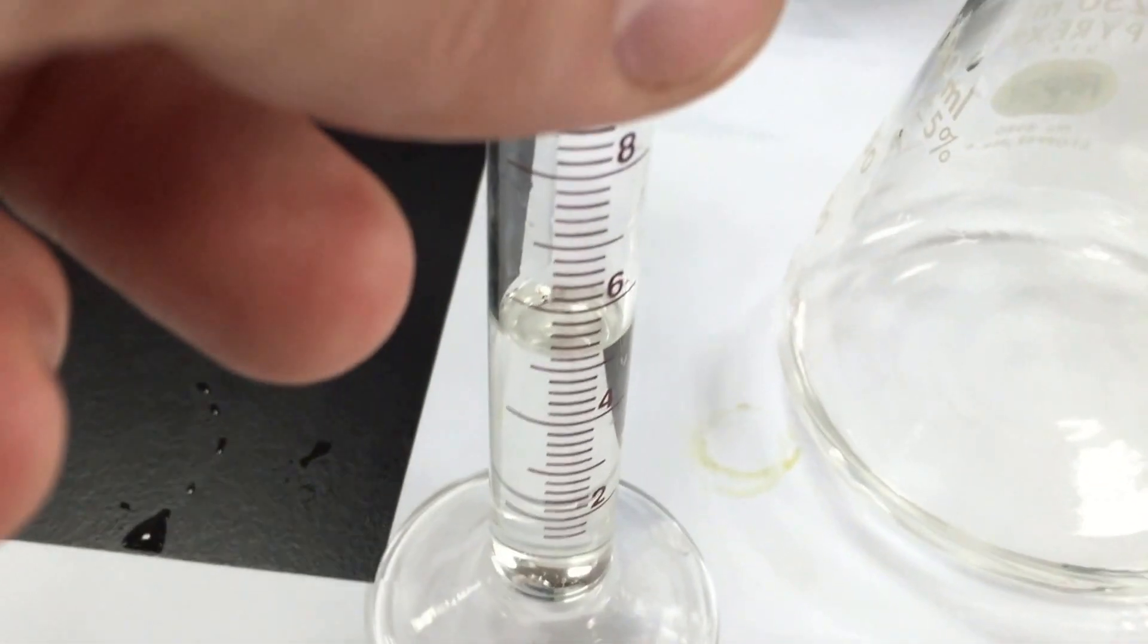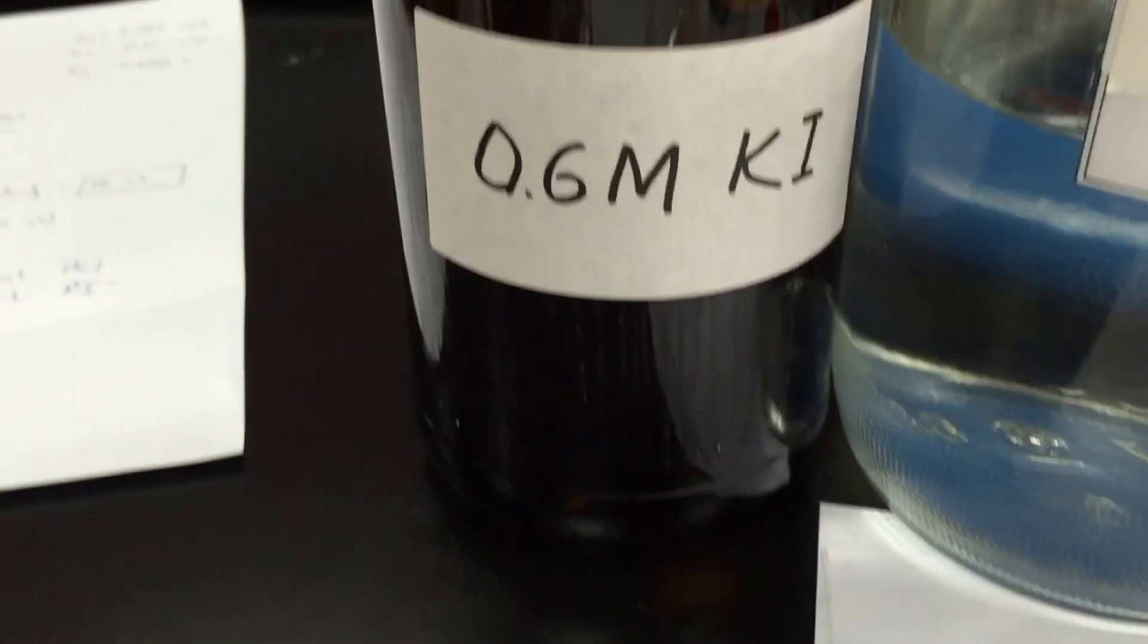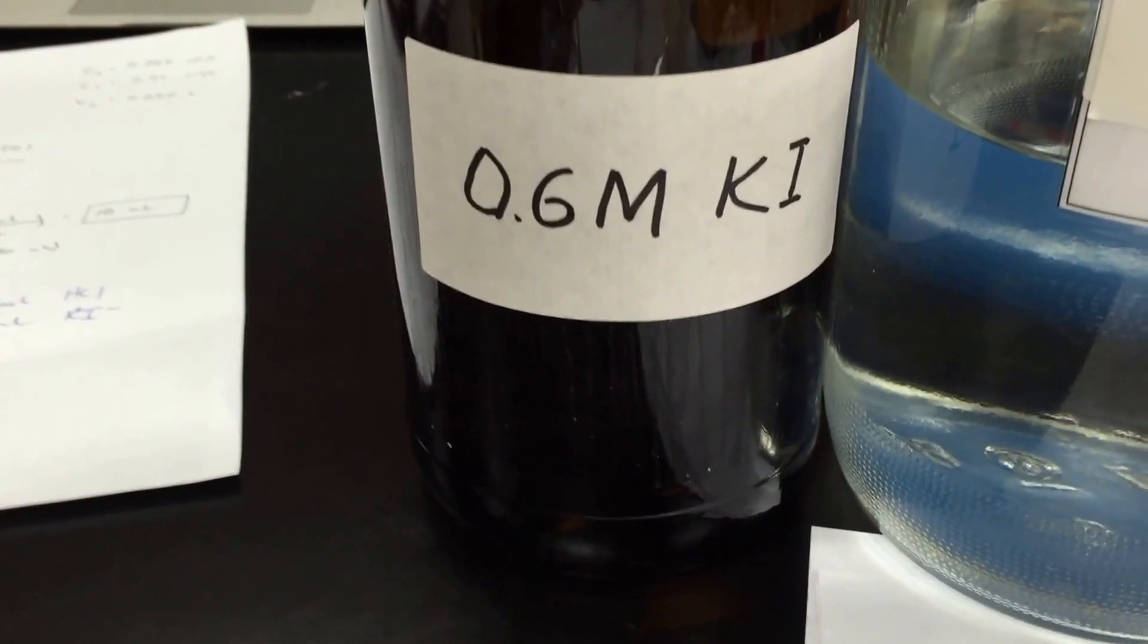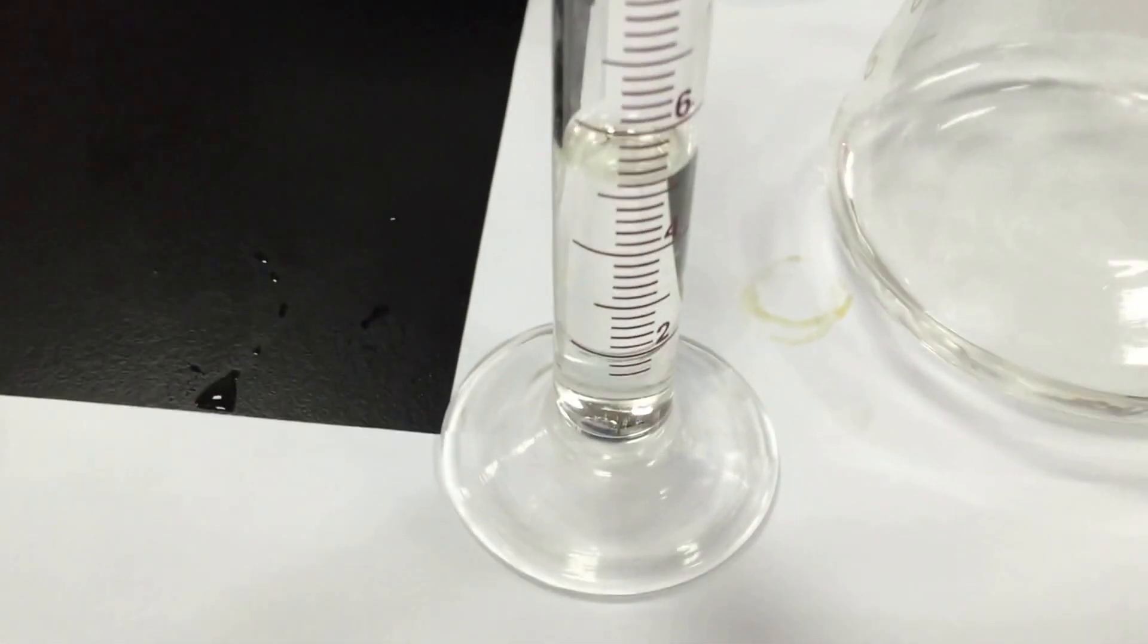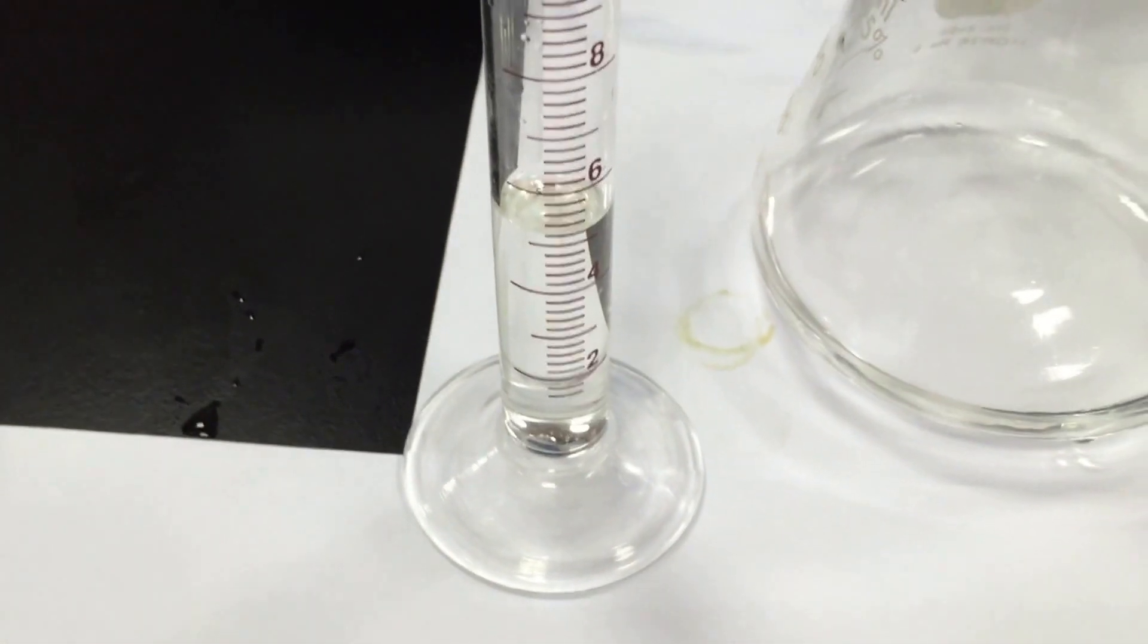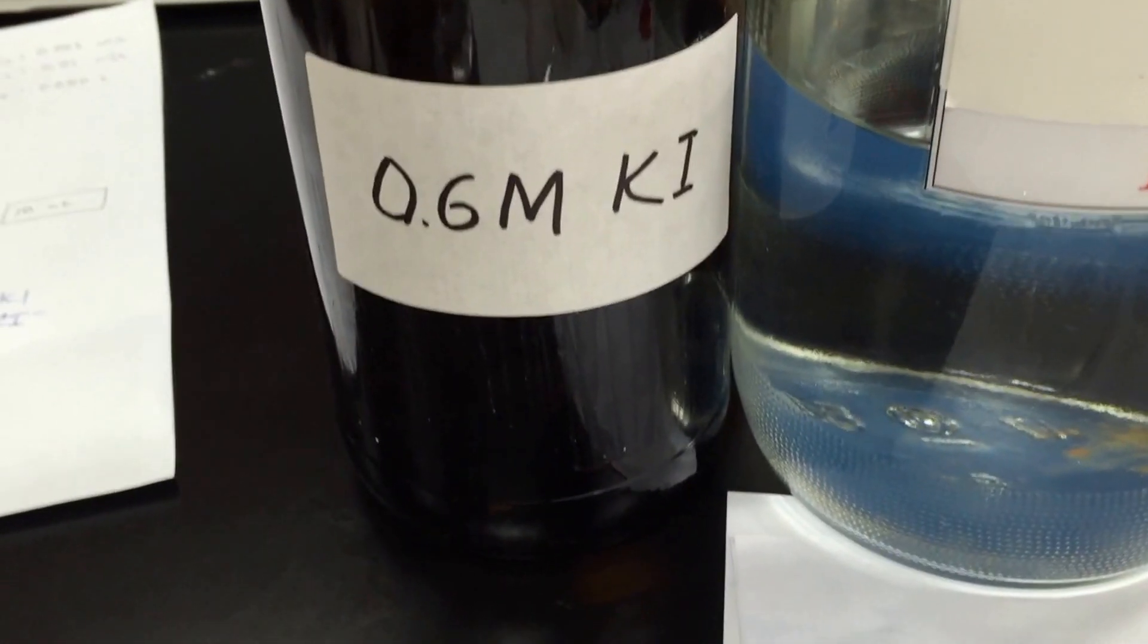So what we've got is five milliliters, approximately five milliliters, of potassium iodide. The iodide is going to cause the iodate to turn into iodine. That's a little confusing, but we're going from iodate into iodine using iodide.